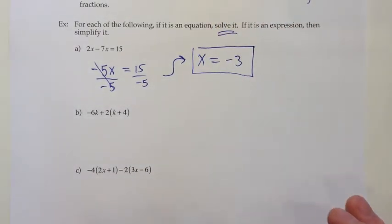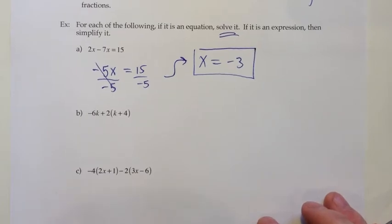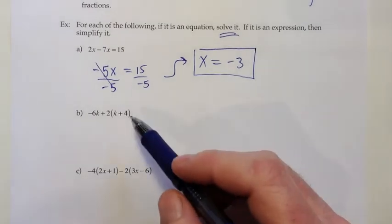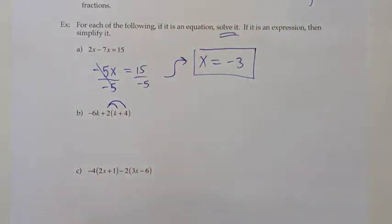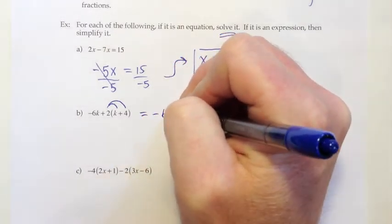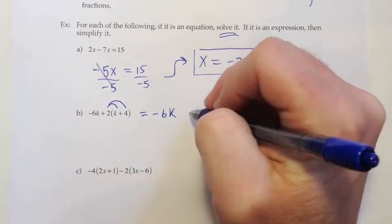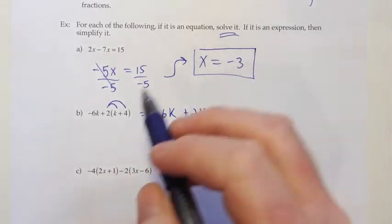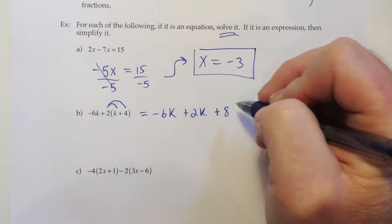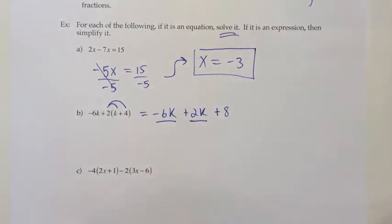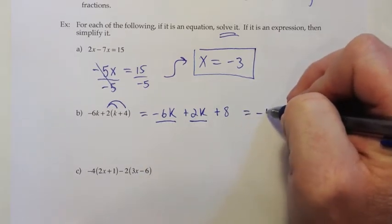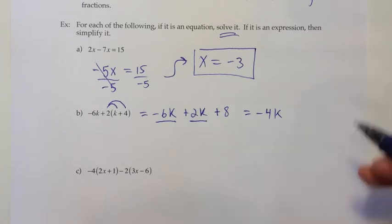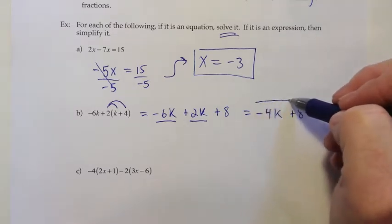Moving on to Part B — the first thing I need to notice is there's no equal sign. With no equal sign, I'm working with an expression, so I just simplify. When there are parentheses, I want to clear them, so I distribute the 2. Copy the 6k, then 2 times k is plus 2k, and positive 2 times positive 4 is plus 8. We have like terms: negative 6k and positive 2k. Negative 6 plus 2 is negative 4, so negative 4k. The plus 8 has no like term, so I copy it over. Done simplifying: negative 4k plus 8.